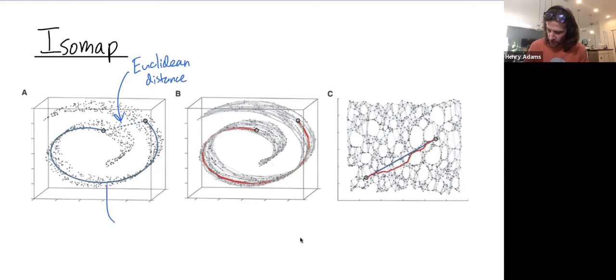I would call this blue dotted line the Euclidean distance, whereas this curve right here I would call the geodesic distance.